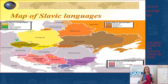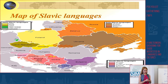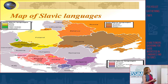In how many countries can we hear and speak Slavic languages? Let's look at this map. As you can see, it's in Eastern and Central Europe, the Balkans, Russia — and I can count at least 20 countries here where you can hear and speak different Slavic languages. According to this map, Slavic languages are divided into three large groups: the West, the East, and the South ones.